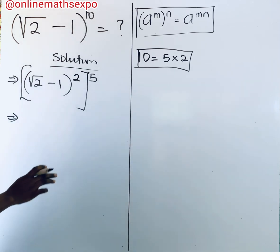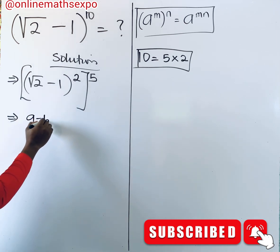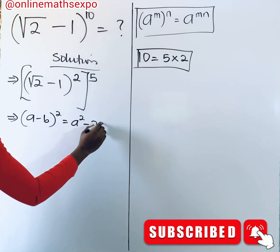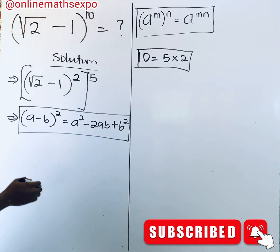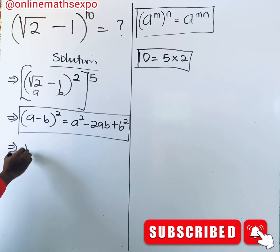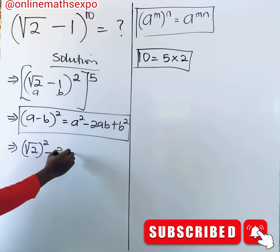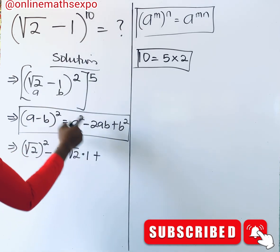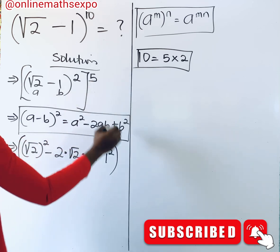Now simplify the inside, which is raised to the power of 2 — this is a binomial of degree 2. Remember that (a − b)² equals a² − 2ab + b². Our a is root 2 and our b is 1, so we get root 2 squared, minus 2 times root 2 times 1, plus 1 squared, and all of this is raised to the power of 5.